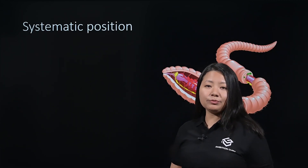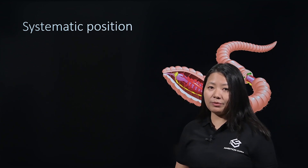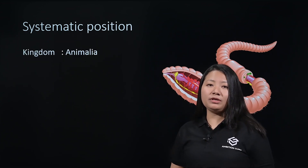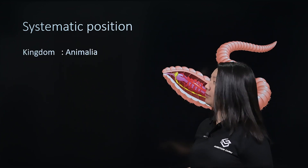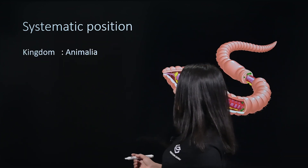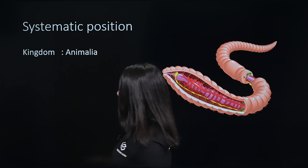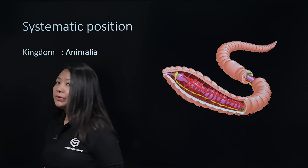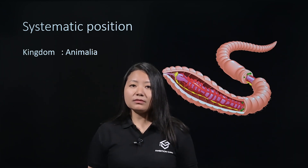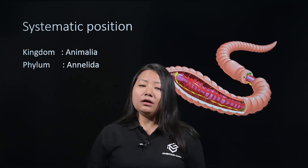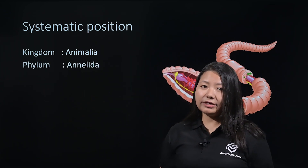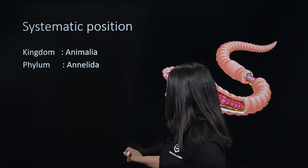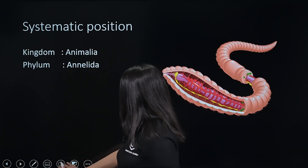So the systematic position of the Earthworm: it belongs to the Kingdom Animalia. Under Kingdom Animalia, it belongs to the Phylum Annelida.